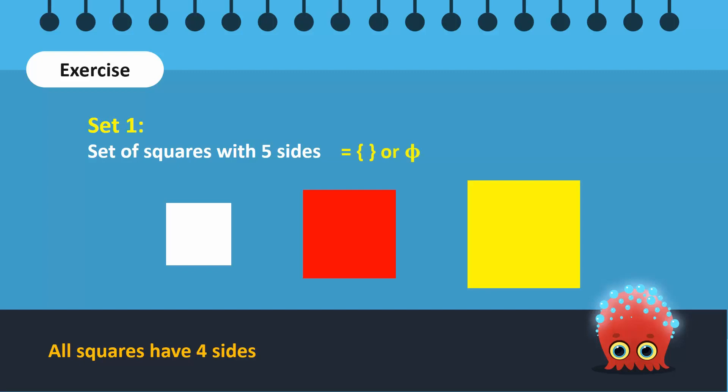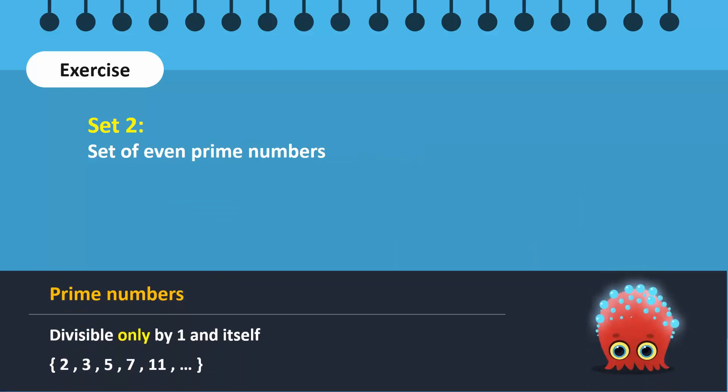Next, recall that prime numbers are only divisible by 1 and itself. It contains the numbers 2, 3, 5, 7, 11, and so on. Observe that 2 is the only even prime number. All other prime numbers are odd. Otherwise, they can be divided by 2.